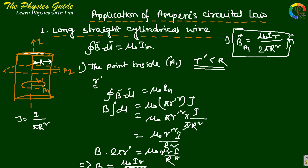For the direction of B, we use the right-hand corkscrew rule. If the current is going in the outward direction — like a screw going outward — we rotate the screw in the right-hand direction. Therefore, the magnetic field at point a1 is directed inward to the board.